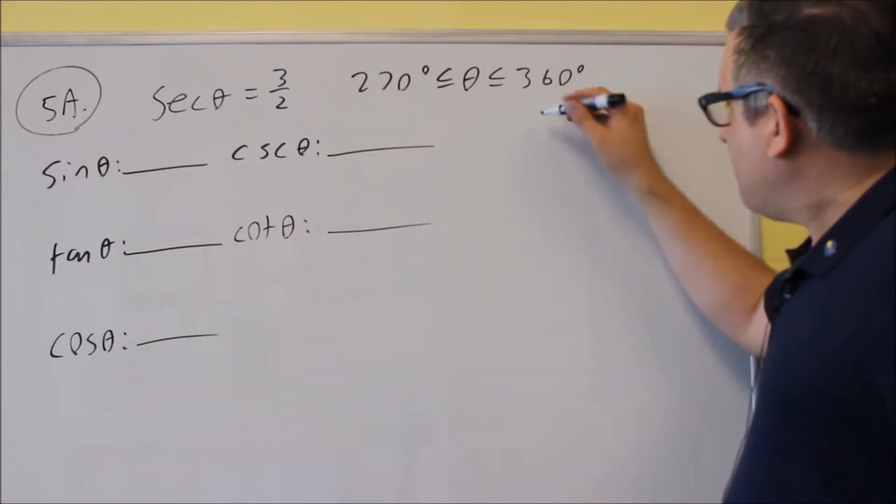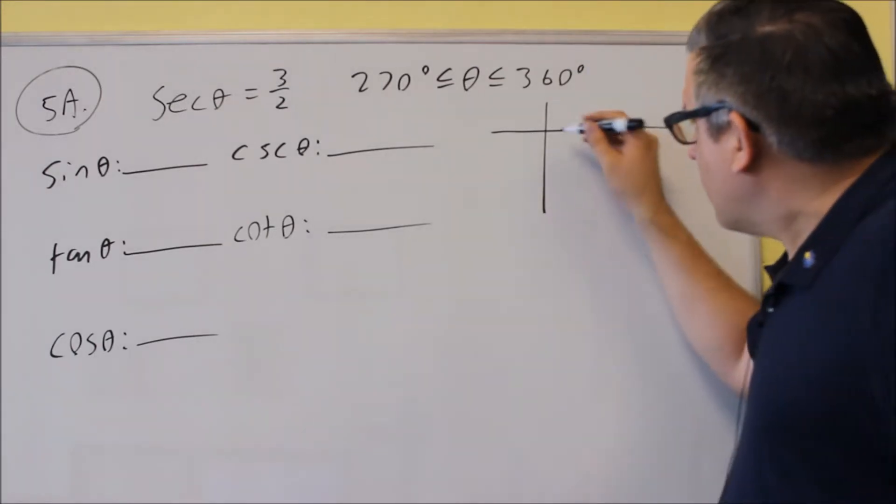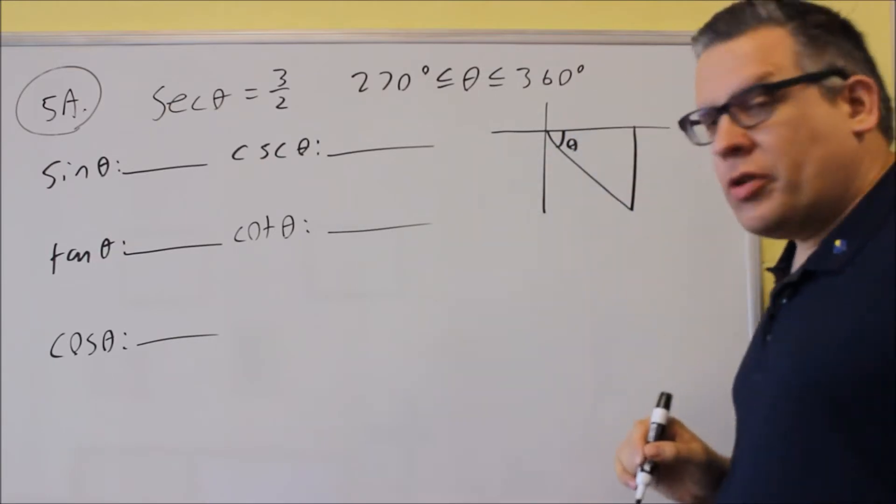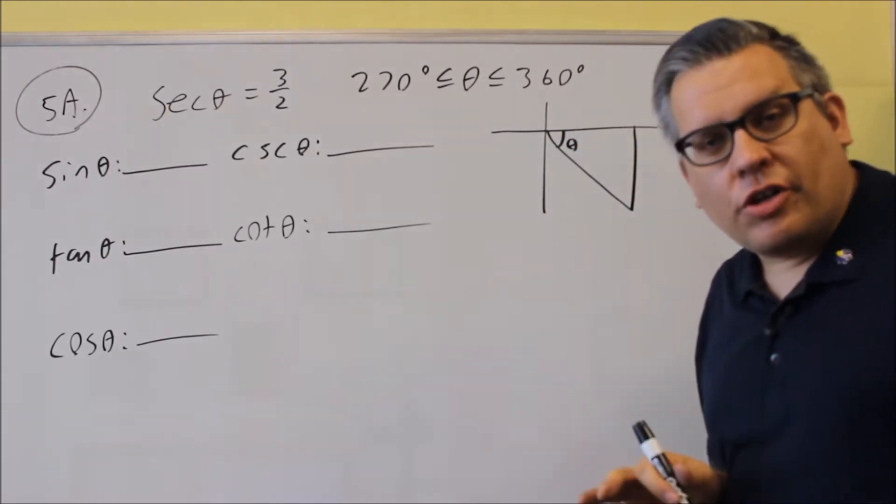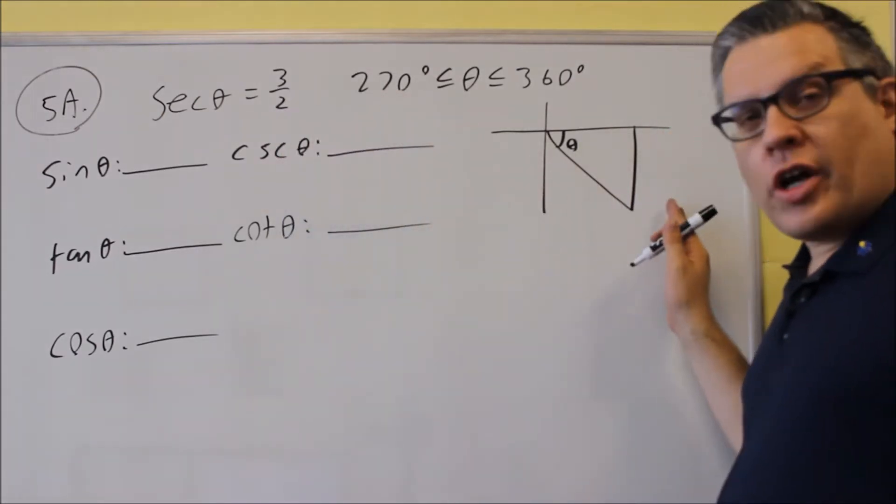So first, we know that the triangle, they tell us, it's in the fourth quadrant. So we're going to draw the triangle here. The theta would be that one. We want to use trig definitions in order to set up the triangle.